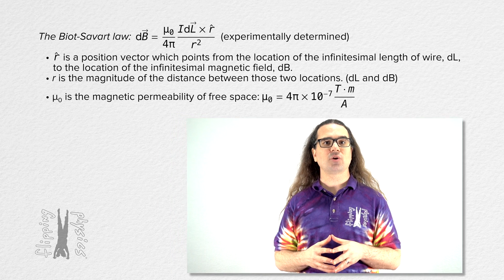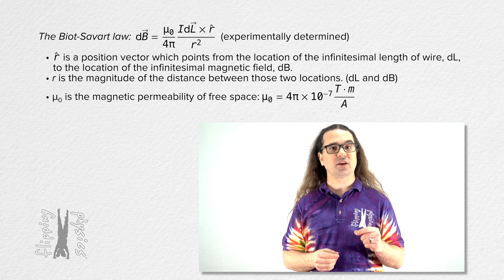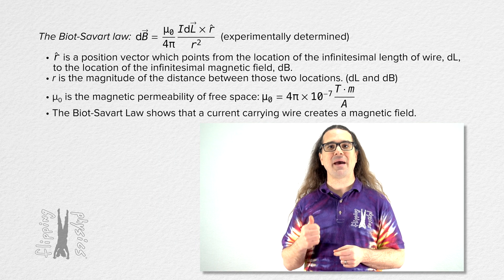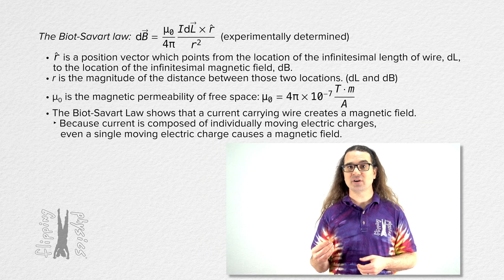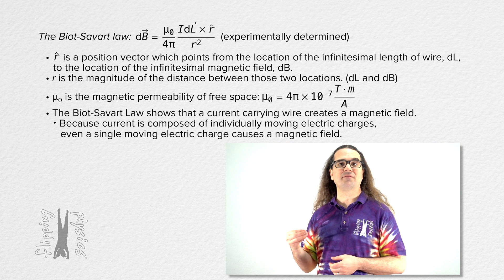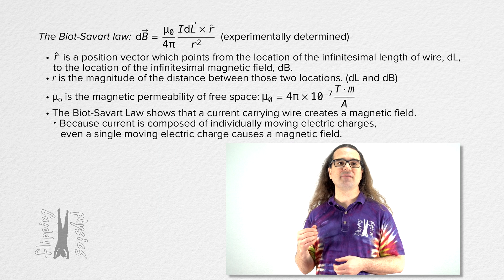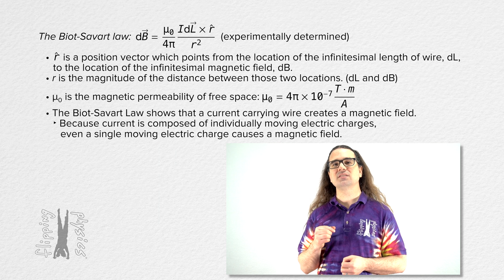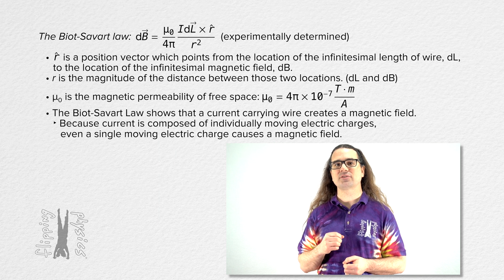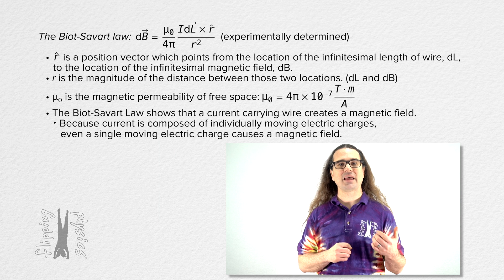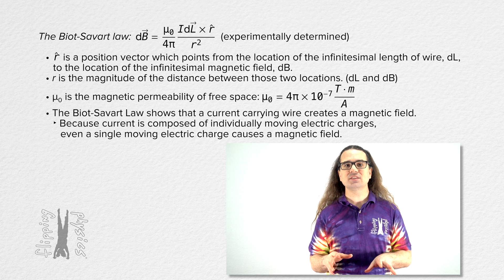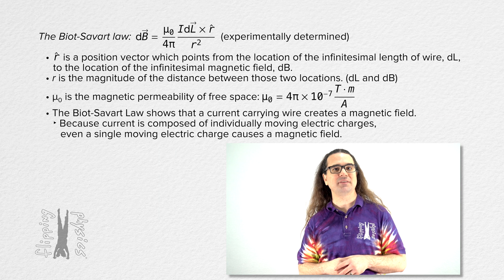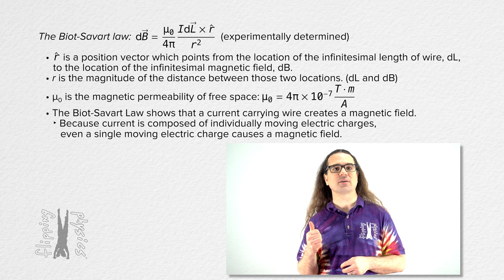This equation shows that a current-carrying wire creates a magnetic field. In fact, because current is composed of individually moving electric charges, even a single moving electric charge causes a magnetic field. Let's talk about the direction of the magnetic field caused by a current-carrying wire.